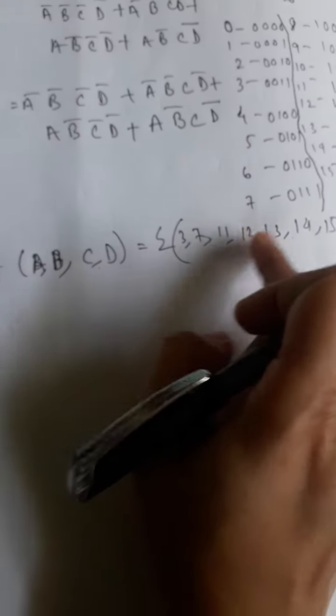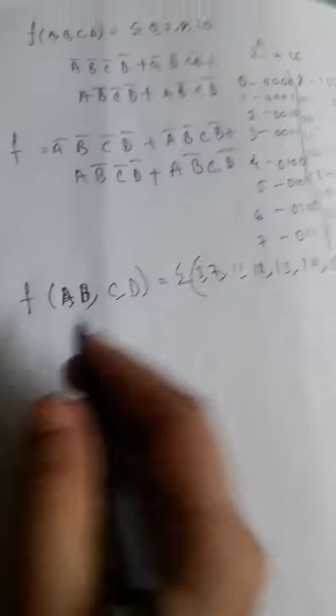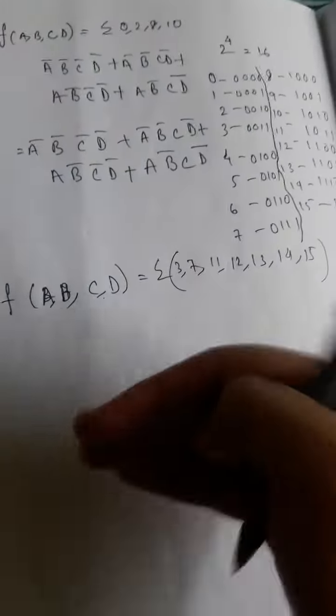These seven terms are in sum of product form. We will follow the same method based on what we have already discussed previously.